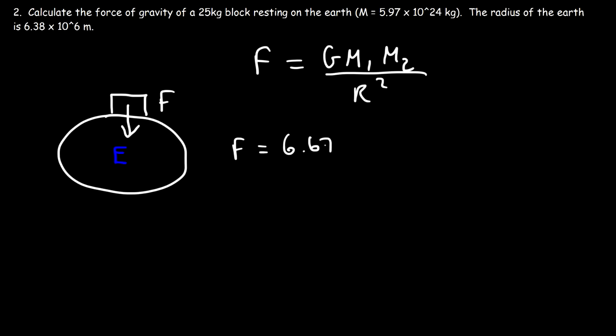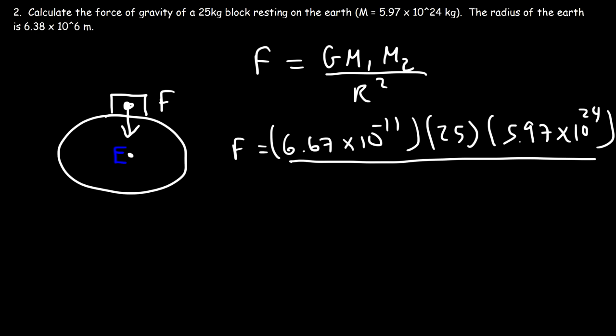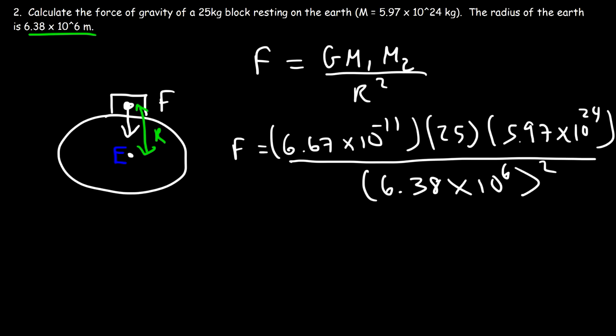So G is 6.67 times 10 to the negative 11. The mass of the first block is 25 kilograms. The mass of the earth is 5.97 times 10 to the 24 kilograms. The distance between the center of the block and the center of the earth is approximately the radius of the earth — the block is relatively small — which is 6.38 times 10 to the 6 meters. Don't forget to square it. So the gravitational force is 244.6 newtons.